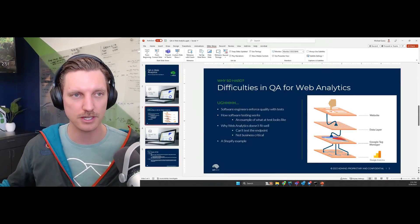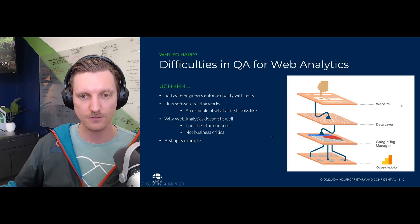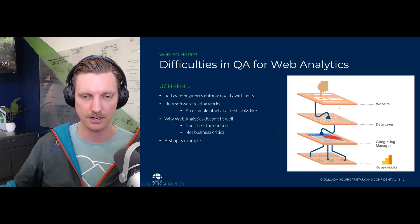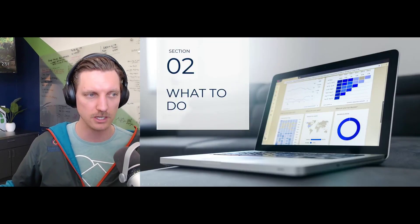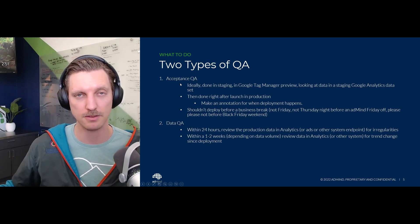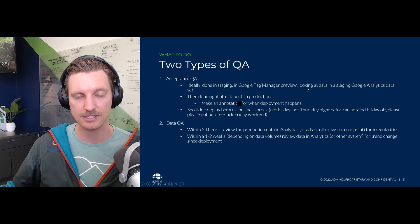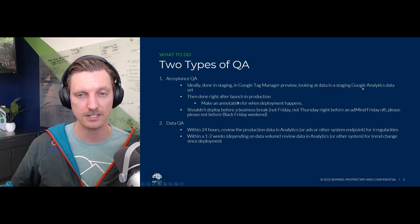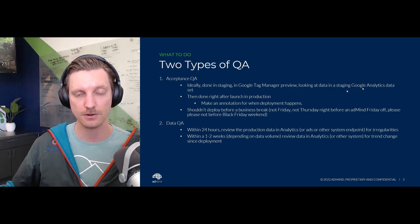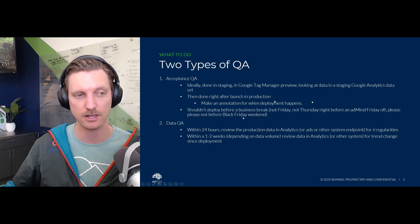So what do you do in this scenario? Since it's not obvious to test and not obvious to know whether you've gotten this exactly right, there are a few different failure mechanisms. Testing exists at the website layer and maybe the data layer, but you can't test what happens in tag manager or the logic or filtering settings in analytics. There are two types of testing as an analytics engineer that you should be running. The first is acceptance quality assurance and the second is data quality assurance. You'll test in staging in a tag manager preview, watching the data sent to the analytics system, making sure that looks right, then looking at the staging Google Analytics data set and confirming the data lands correctly.